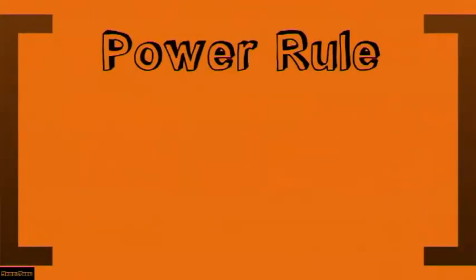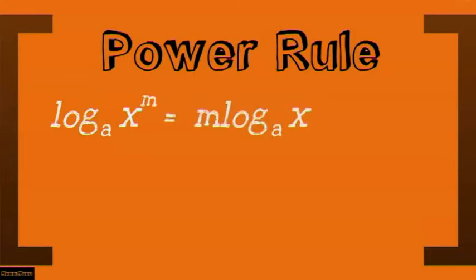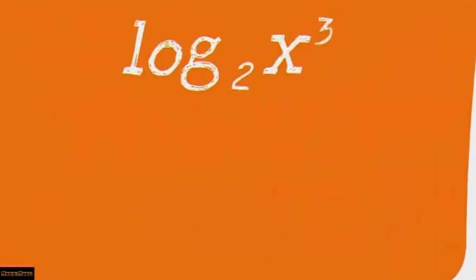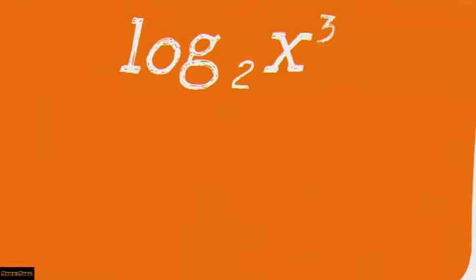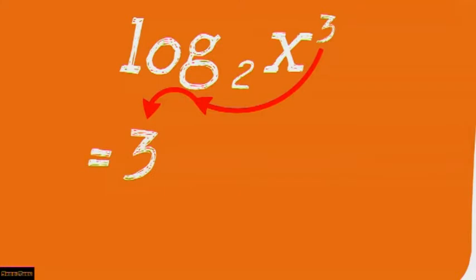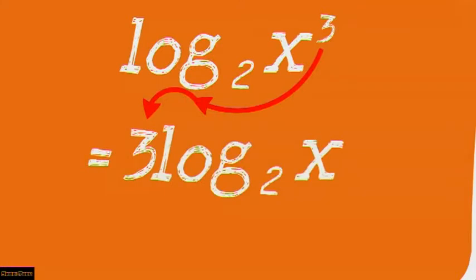Now let's look at the power rule. The power rule states that if you have log base a of (x to the power m), this will equal m times log base a of x. The exponent m comes to the front and becomes the coefficient of log base a of x. For example, given log base 2 of (x to the power 3), the 3 comes to the front and we end up with 3 log base 2 of x.